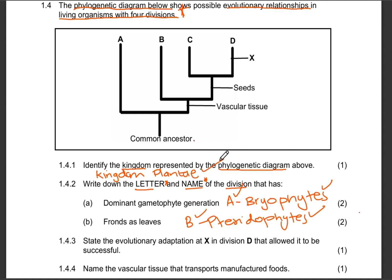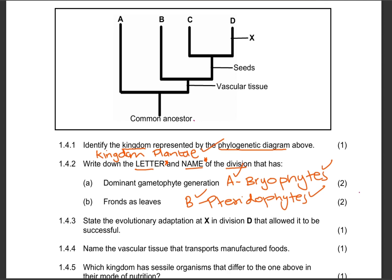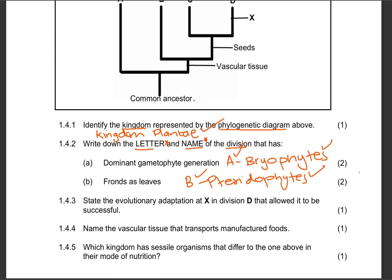For question 1.4.1, it's one mark for the word Plantae — kingdom Plantae, or Plantae, or the plant kingdom. Question 1.4.3: state the evolutionary adaptation at X in Division D that allowed it to be successful.